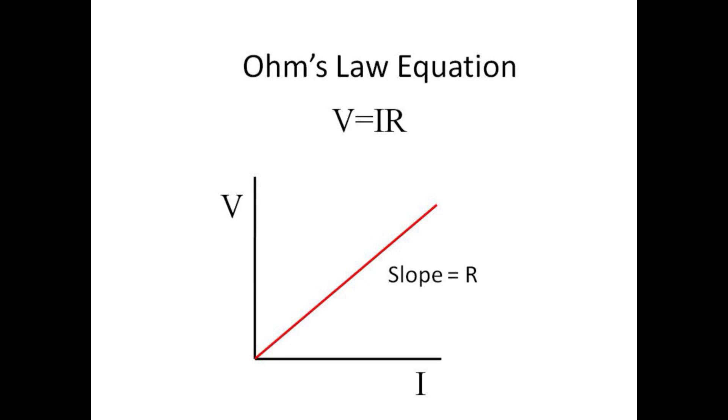Ohm's law states that the current flowing through a resistor is proportional to the voltage applied. More voltage implies more current. The voltage V is equal to the product of current I times resistance R. V equals IR. A plot of voltage versus current yields a straight line with a slope equal to the resistance R.